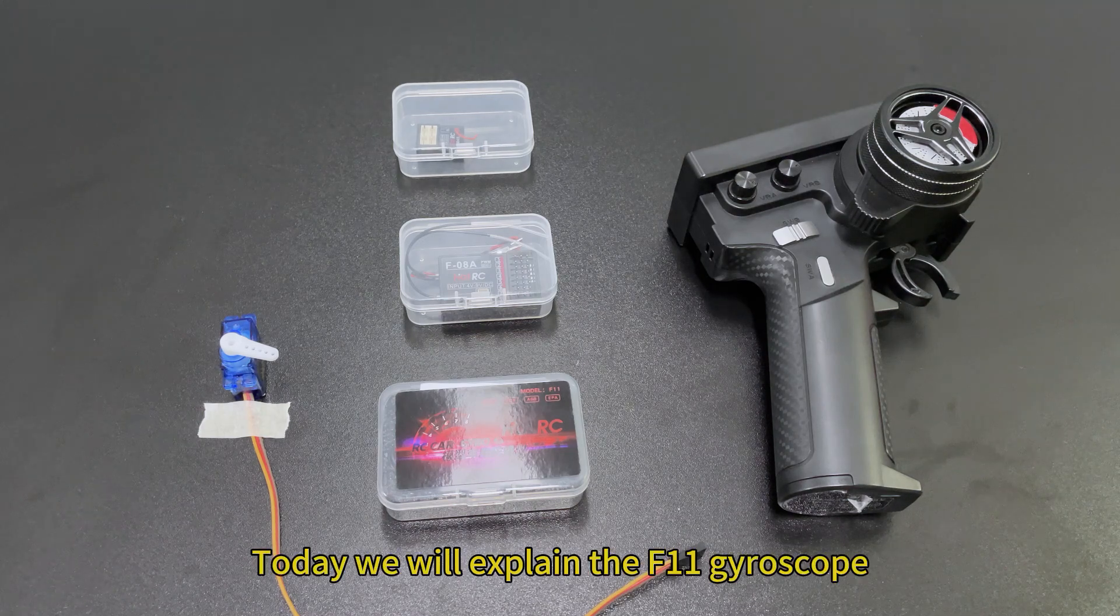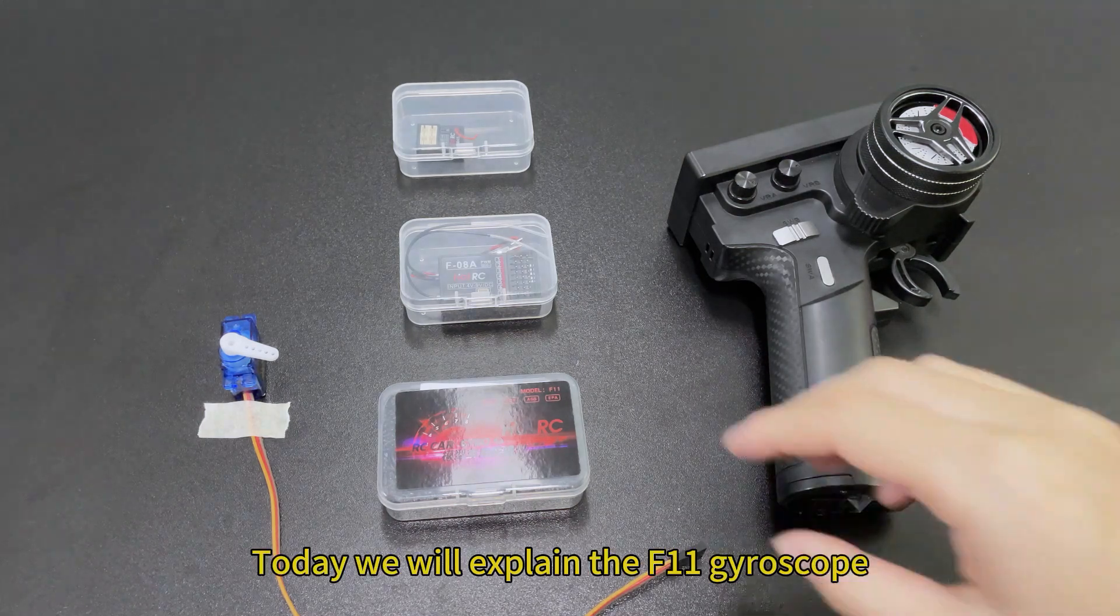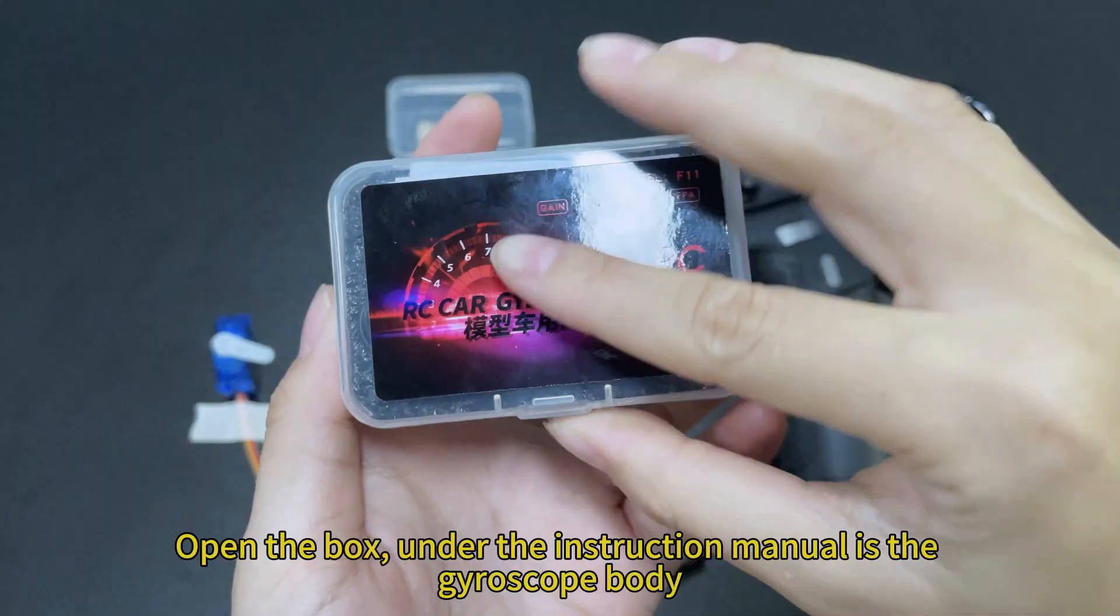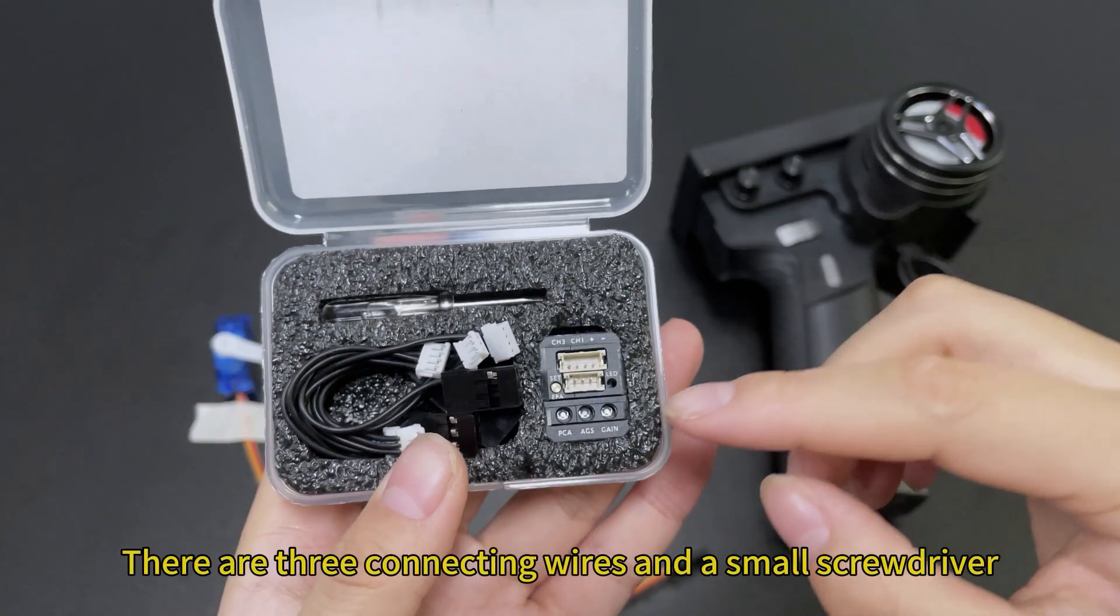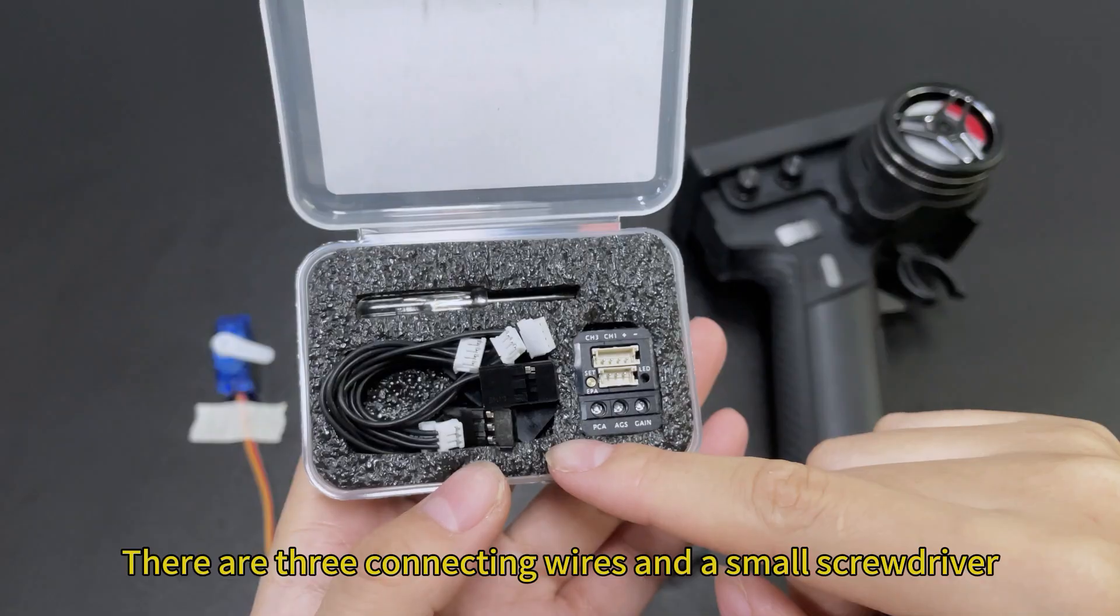Hello everyone, today we will explain the ZF-11 gyroscope. Open the box. Under the instruction manual is the gyroscope body. There are three connecting wires and a small screwdriver.